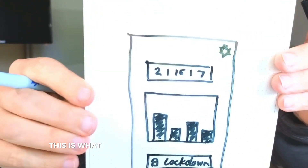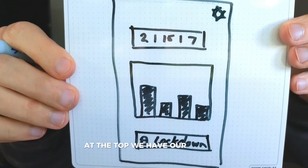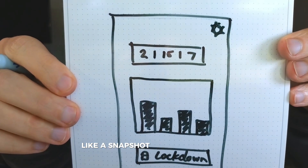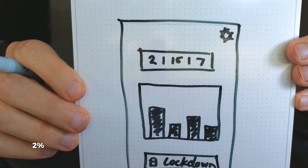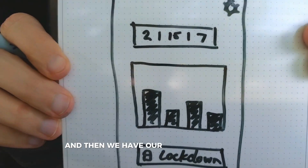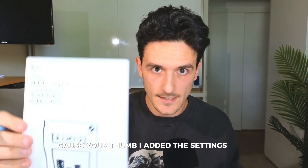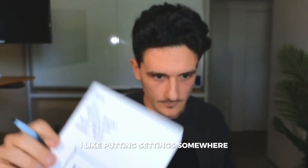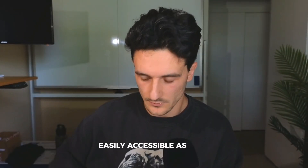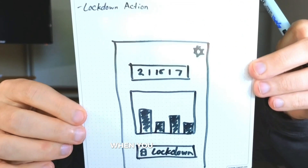I'm terrible at drawing, just don't make fun of me. This is what I'm envisioning for the home screen. At the top we have our insights — like a snapshot of, you know, a 2% increase and whatever. We have a graph in the middle, and then we have our lockdown button that is easily accessible from the bottom of the screen because of your thumb. I added the settings gear — I like putting settings somewhere easily accessible as well. And that's it for the home screen. This is what the app is going to look like when you open it up, and it will be cool to see the finished product compared to this.